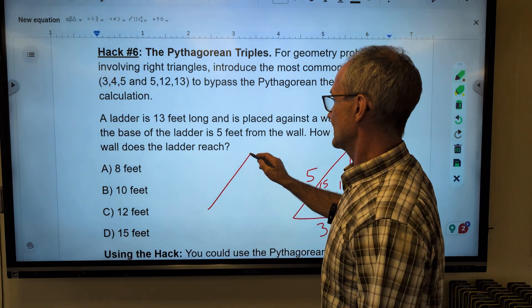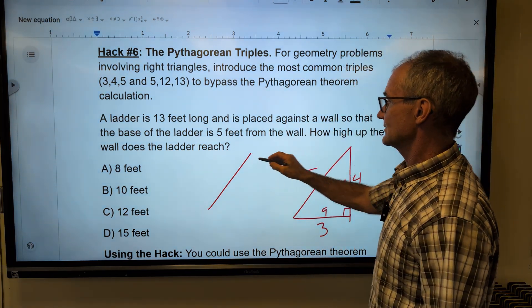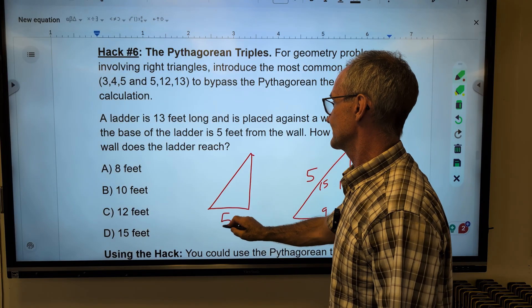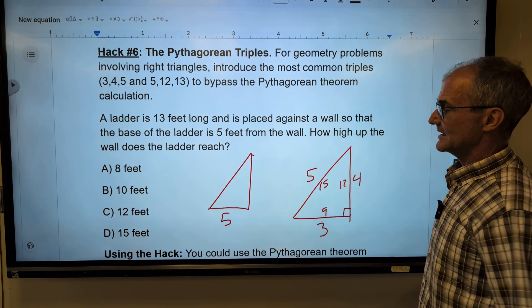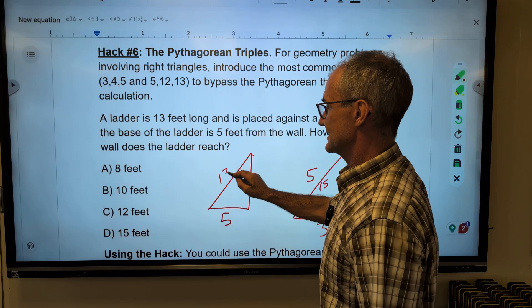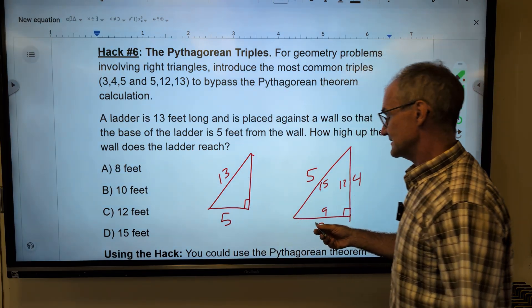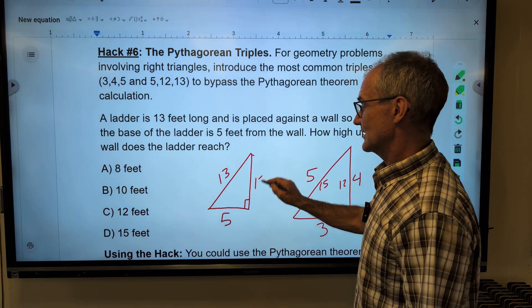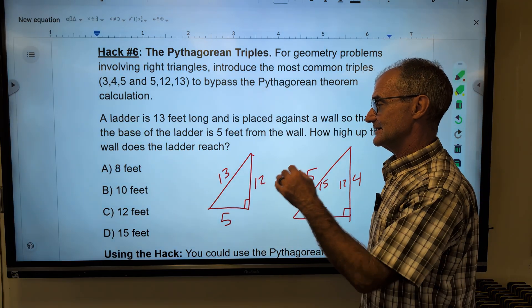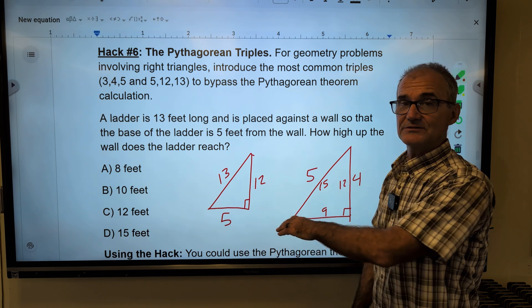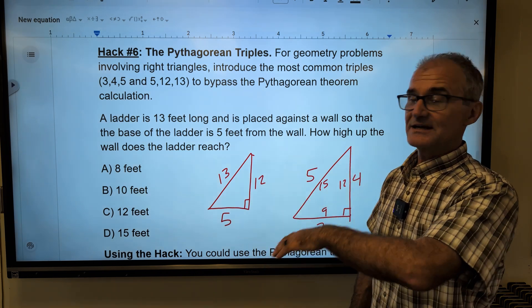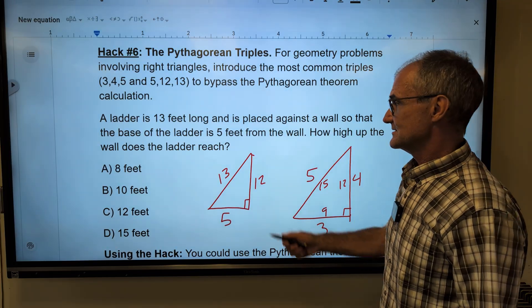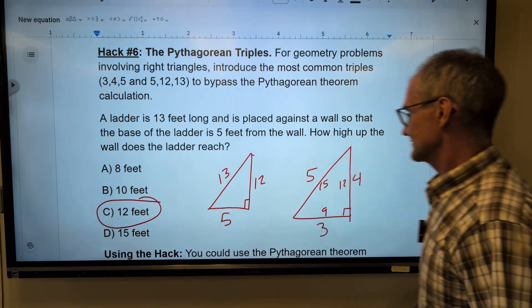A ladder is 13 feet long. It's placed against a wall so that the base of the ladder is five from the wall. How high up the wall does the ladder reach? So these are the dimensions. Another one of these Pythagorean triples, beside three, four, five, is the five, twelve, thirteen. A lot of the times they're going to use these triples because it's a time test and you've got to know those tricks to do it in time. So correct answer, answer C, twelve.